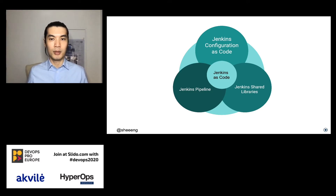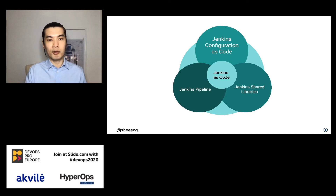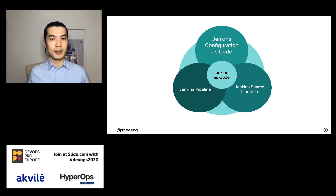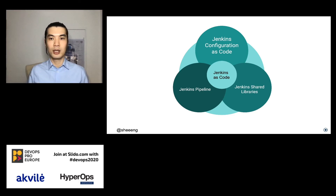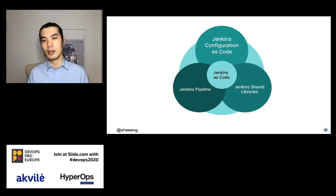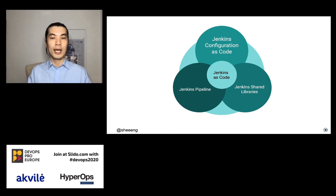The third main pillar of Jenkins as Code is Jenkins Shared Library. When we have multiple projects using similar steps and similar functions in Jenkins Pipeline, we want to extract those common functionalities and put them in a Jenkins Shared Library. For example, if we have a few Node.js projects with similar build, test, and packaging steps, we extract those common functionalities to avoid duplication of code and ease maintenance.